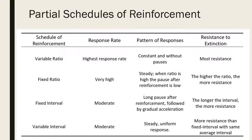Lastly, variable interval schedules produce a steady rate of response. Presses of the redial button on the telephone are sustained at a steady rate when you are trying to reach your parents and get a busy signal on the other end of the line.